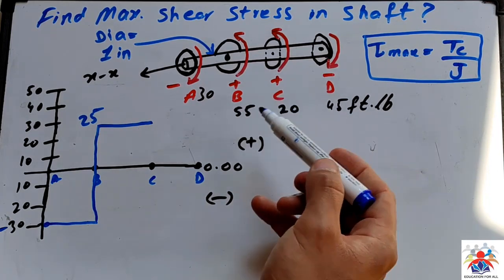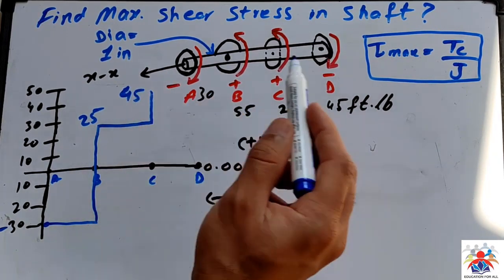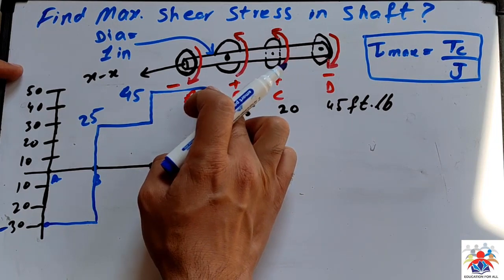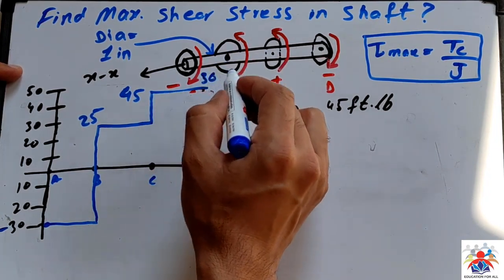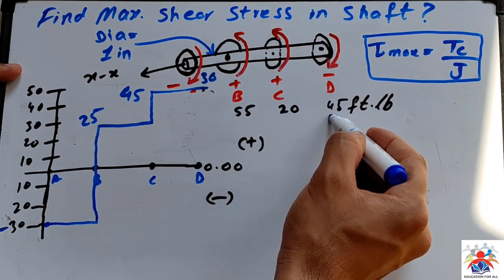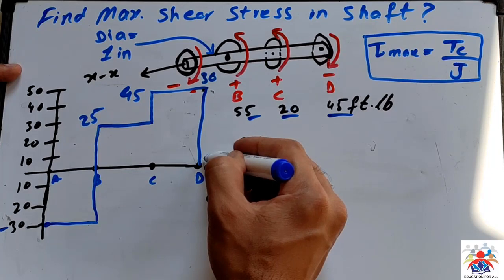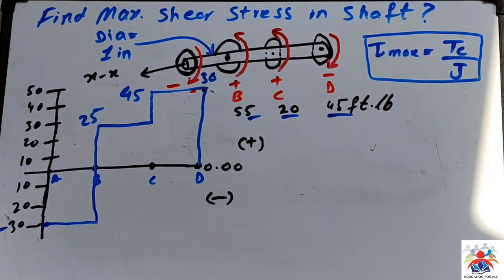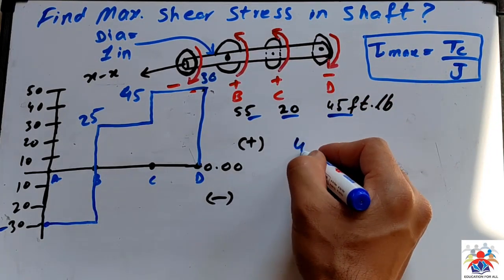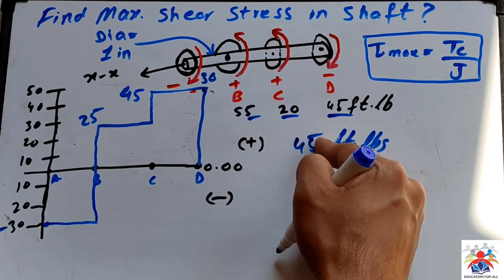We will go upwards 20 units, so we are here at 45. And then we will go to point D. At point D it says minus 45. So I will come down 45 and we are at the line of zero. That means the maximum torque we have is 45 foot-pounds.